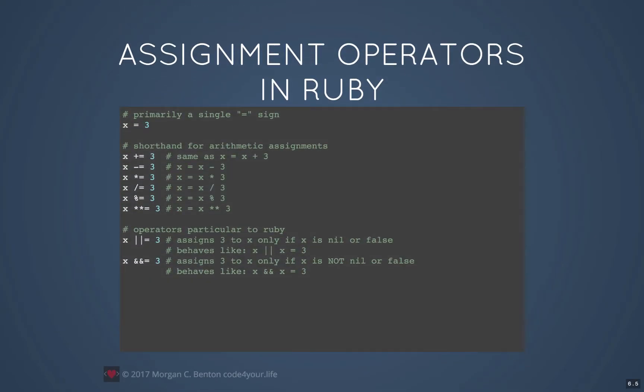Ruby is pretty similar to the other ones, but there are a couple of operators particular to Ruby. One is the pipe pipe equals — that vertical bar is referred to as a pipe. The pipe pipe equals and the ampersand ampersand equals operators are used in situations where you need to assign a value only if it either did or did not have a value before, as the example explains.